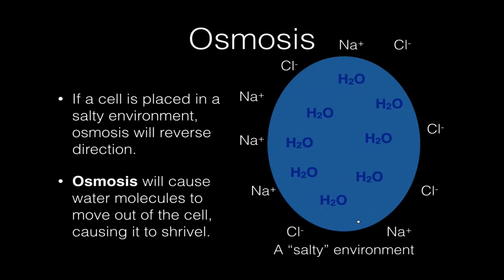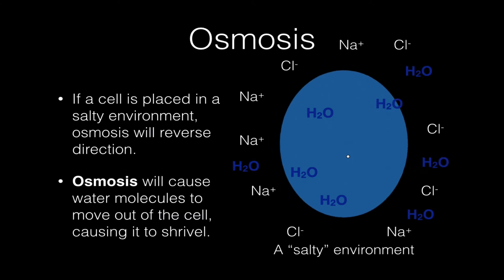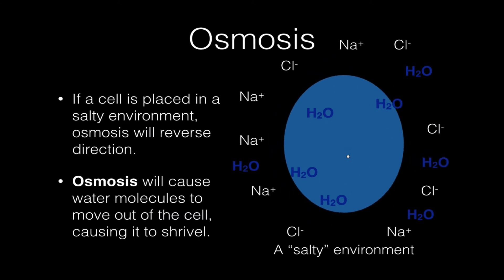If we reverse the situation and we put a cell that has a lot of water in its cytoplasm in a very salty environment, just the opposite is going to happen. Osmosis is going to pull water out of the cytoplasm, and this is going to cause the cell to shrink or shrivel.